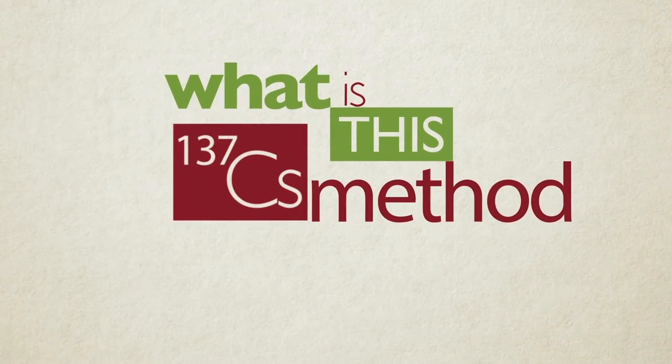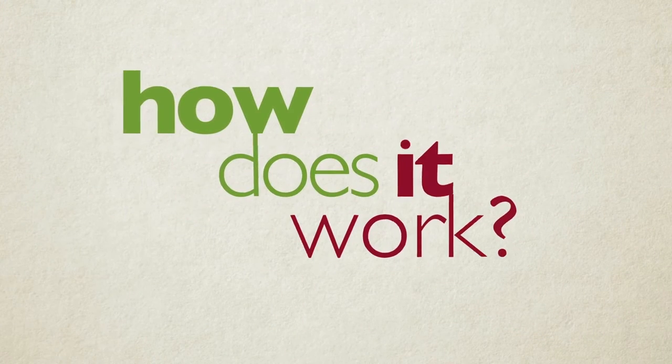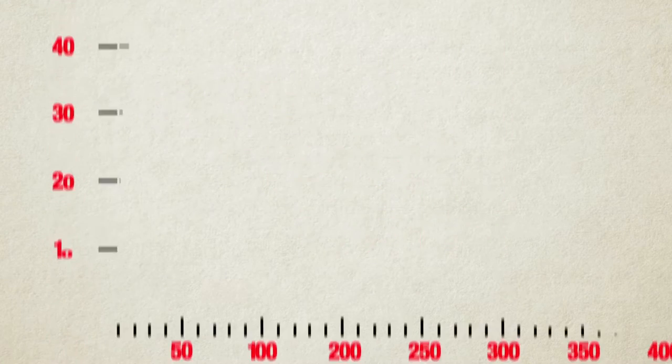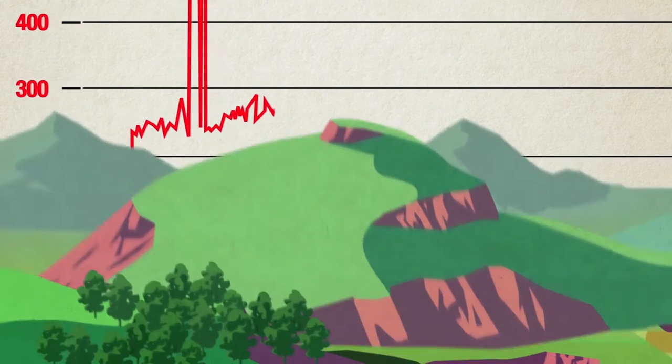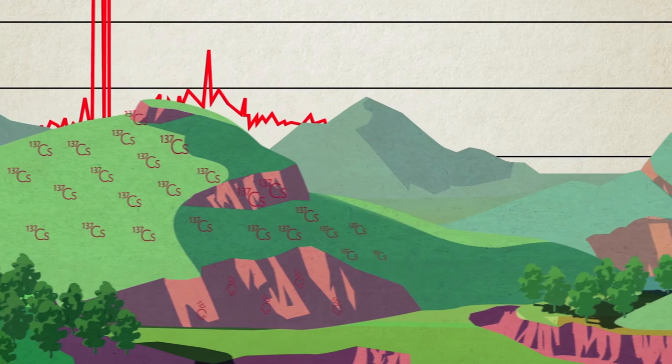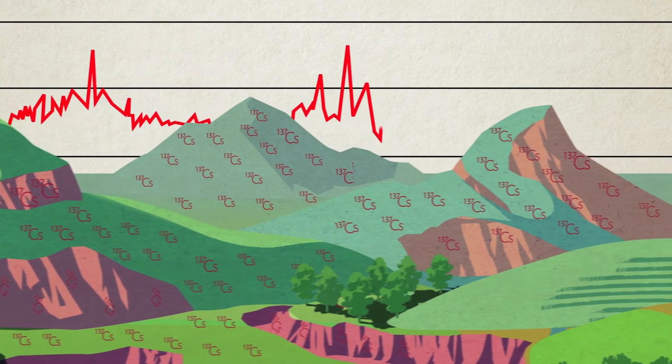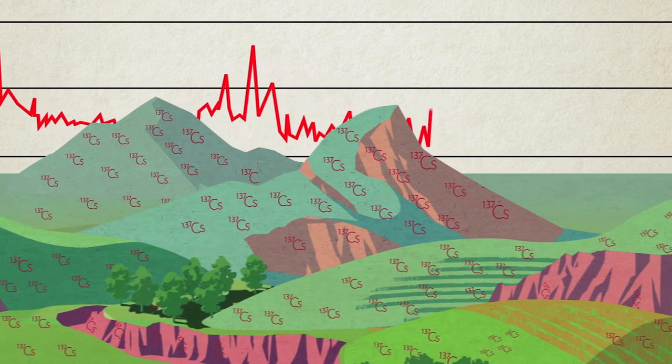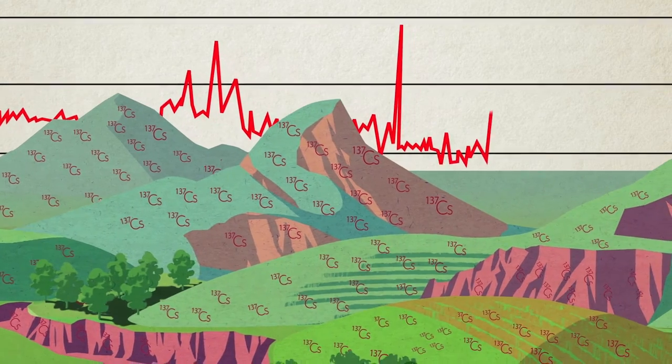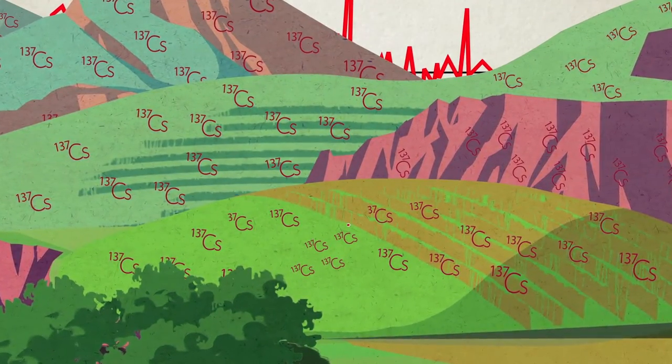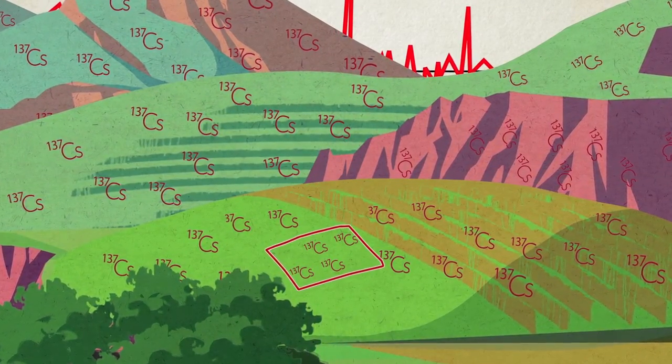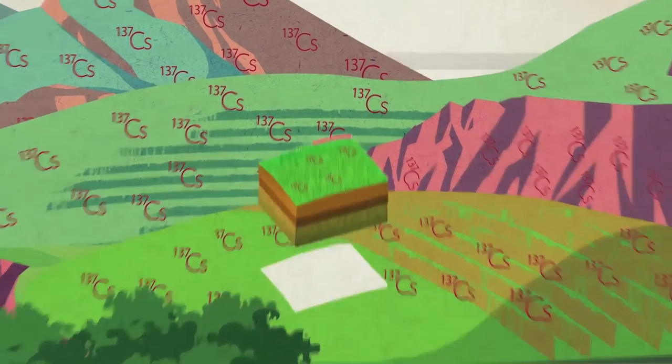What is this cesium-137 method? How does it work? The cesium-137 method uses gamma spectrometry measurements to compare the total cesium-137 content in eroding or depositing sites with the cesium-137 content at undisturbed stable areas, known as reference sites.